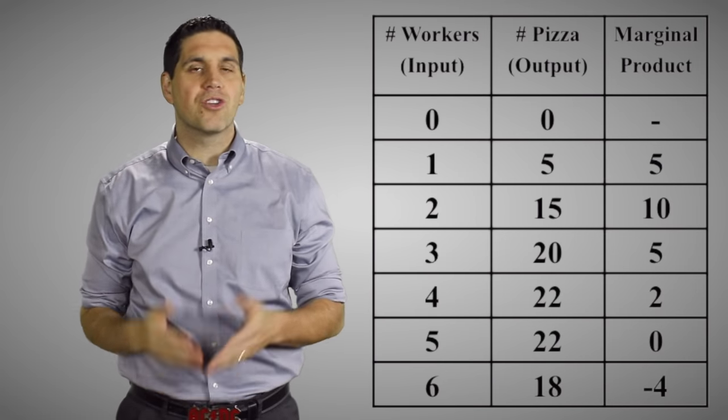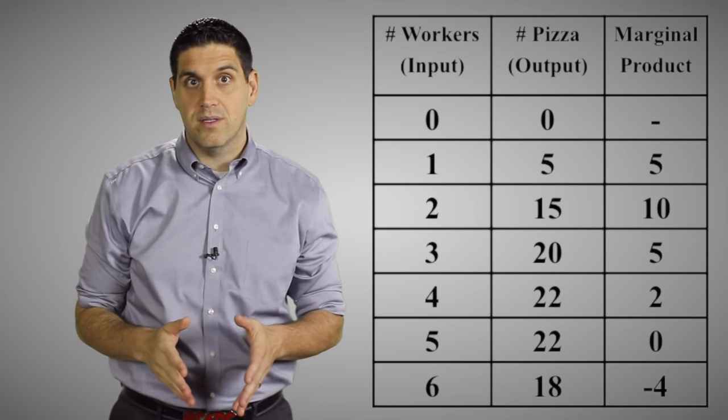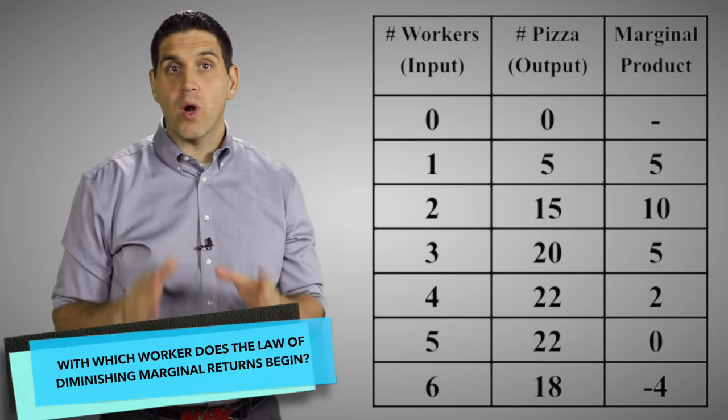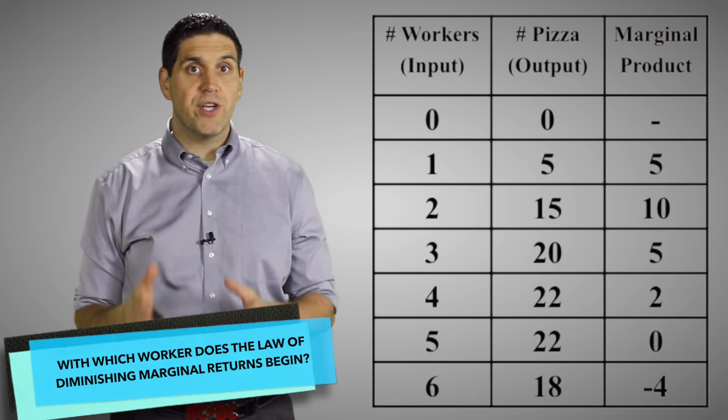Now keep in mind, this is not because the workers are lazy or dumb. It's because of fixed resources. Here's a question: With which worker does the law of diminishing marginal returns set in?